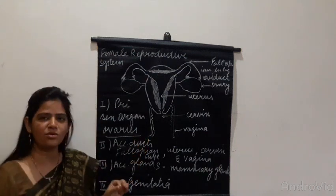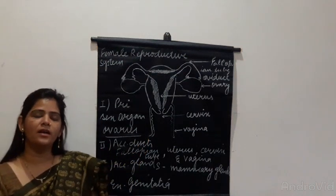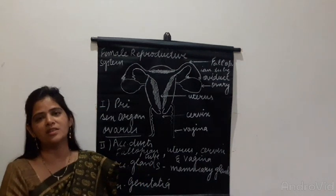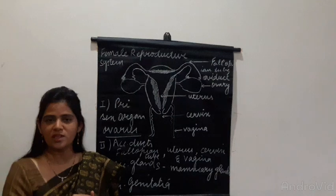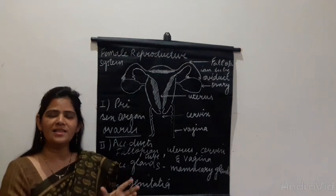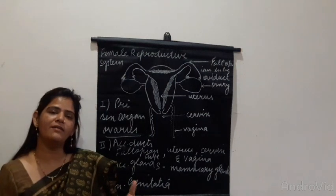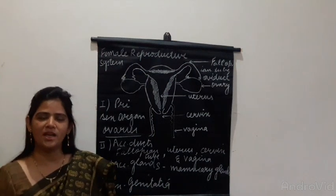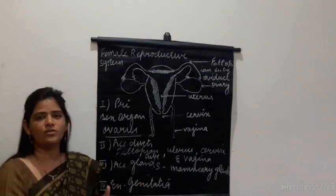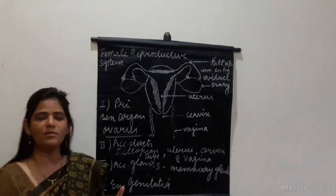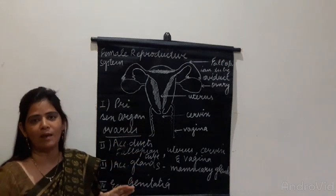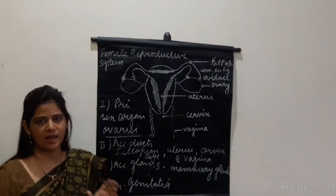The ovaries produce two hormones: estrogen and progesterone. Progesterone is required throughout pregnancy and is responsible for maintaining the pregnancy. Estrogen is required for female secondary sexual characteristics, like the development of hair under the armpits and around the genital area, and the enlargement of the breasts. The menstrual cycle is also controlled by these hormones. So the ovary produces both these hormones along with the egg cells.